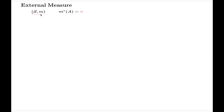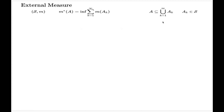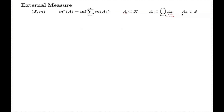M* is associated with this couple and is defined as the infimum of all possible sums, where A_k are elements of your semi-ring which cover the set A — not necessarily in a disjoint way. We put no restrictions on the set A whatsoever; it is just any subset of the universal set X. So for any set A in X, M*(A) equals the infimum over all such coverings from the semi-ring S.